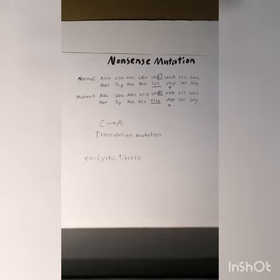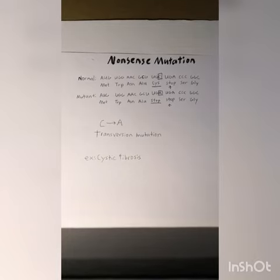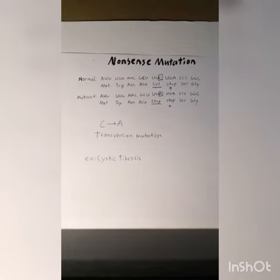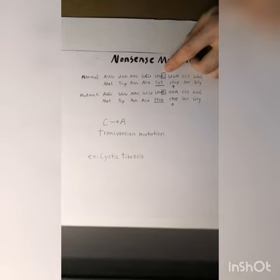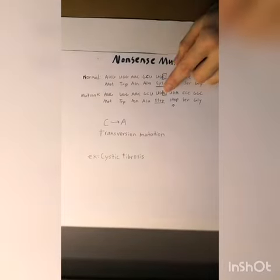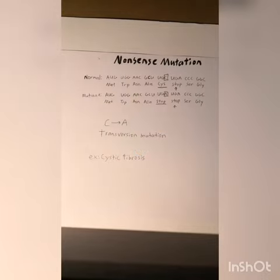A nonsense mutation stops the code prematurely, as shown in this transversion mutation here. In this sequence, a C turns into an A, turning Cys to a stop codon. An example of that in real life would be cystic fibrosis.